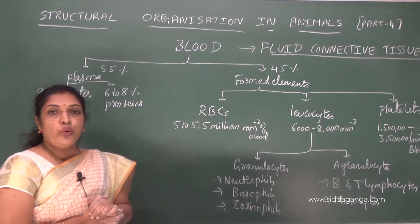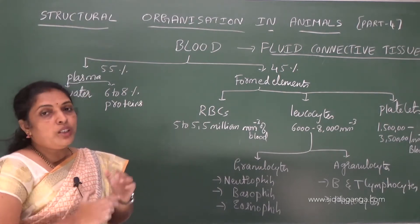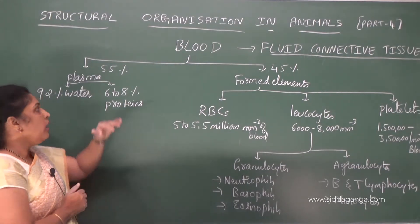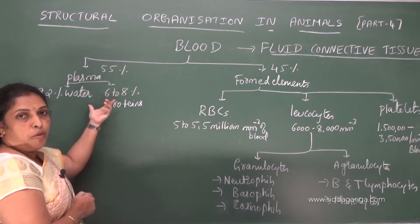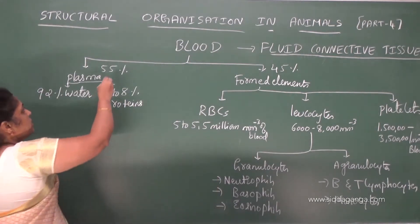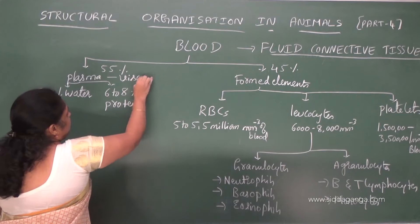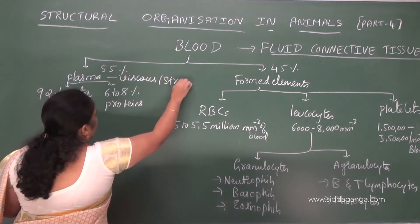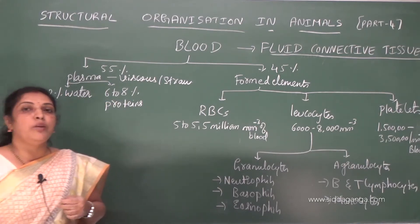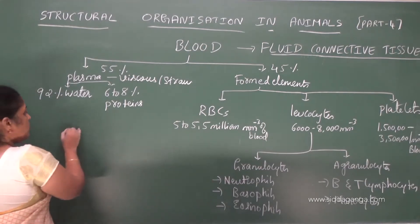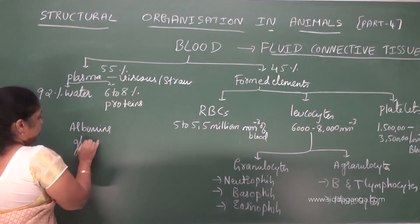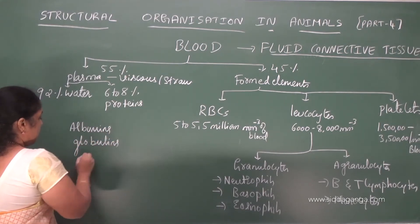Blood is a fluid specialized connective tissue. Blood is made up of plasma and formed elements. Nearly 55 percent of blood is made up of plasma, and only 45 percent is made up of formed elements. This plasma is a viscous straw-colored fluid containing nearly 92 percent water and 6 to 8 percent proteins — albumins, globulins, and fibrinogen.